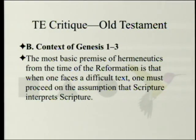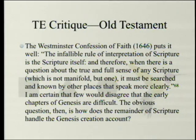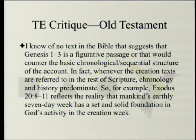The most basic premise of hermeneutics from the time of the Reformation is that when one faces a difficult text, one must proceed on the assumption that Scripture interprets Scripture. The Westminster Confession of Faith puts it well: 'The infallible rule of interpretation of Scripture is the Scripture itself, and therefore when there is a question about the true and full sense of any Scripture, which is not manifold but one, it must be searched and known by other places that speak more clearly.' I know of no text in the Bible that suggests Genesis 1 through 3 is figurative or would counter the basic chronological sequential structure of the account. Whenever the creation texts are referred to in the rest of Scripture, chronology and history predominate.